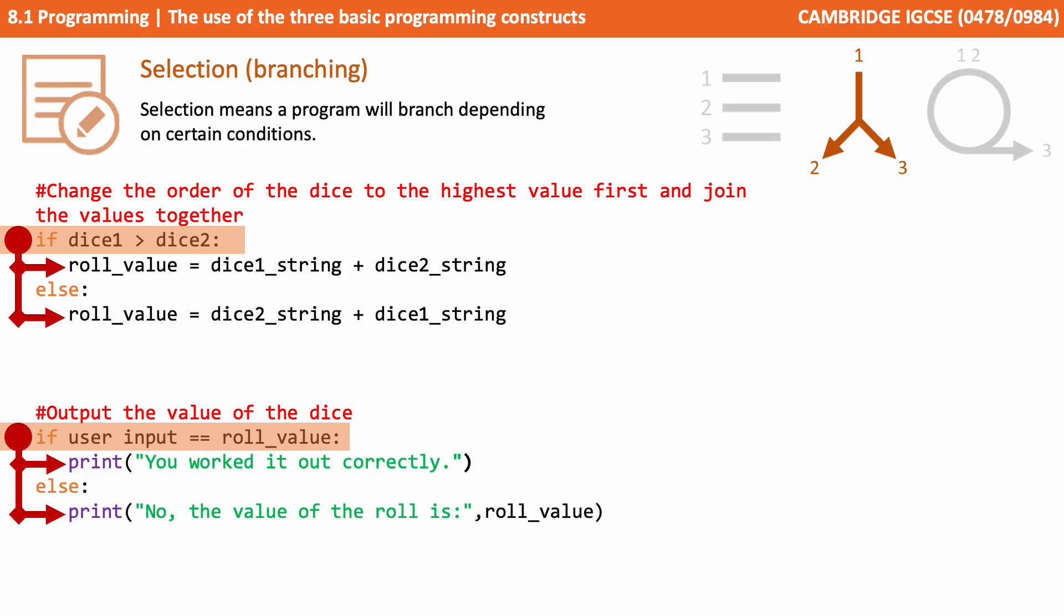Again we see another example of branching later down in the program. If user input equals roll value, if that's true we're going to output to the screen 'you worked it out correctly.' But if that boolean expression is not true, then we jump to the else and instead we output to the screen 'no, the value of the roll is' and then we display the contents of the roll value variable. Our code is now able to make choices.